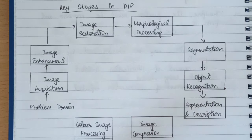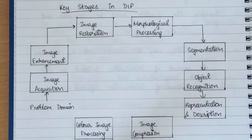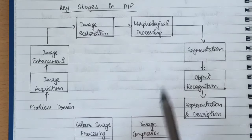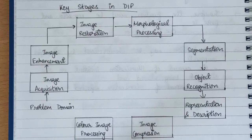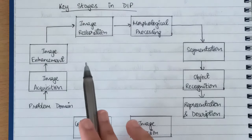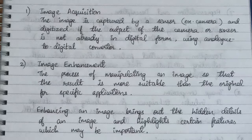Just because I have represented all these steps with the help of these arrows doesn't mean that all of them are performed on the image — two or three can also be applied on the image. It is based on the application. For noise reduction certain processes are used; for scene understanding certain other processes are used. So based on the application, these processes are applied on the image.